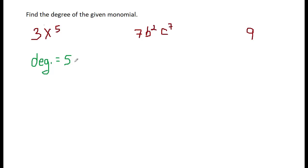Well, when you have more than one variable and it's a monomial, you just add the exponents together. So to get my degree for this one, I have to add my exponents. The exponent of the B is 2, the exponent of the C is 7.